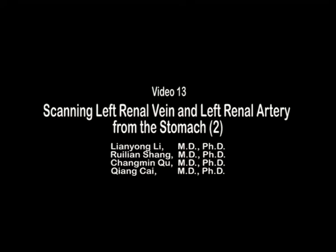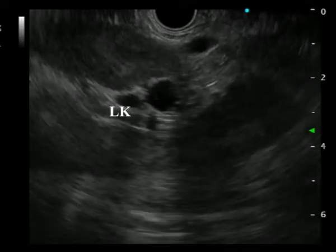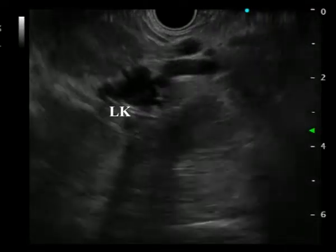Video 13: scanning left renal vein and left renal artery from the stomach, same process as shown in video 12. By advancing the scope from the cardia or withdrawing the scope from the antrum, the characteristic renal structures consisting of the outer hypoechoic cortex and the inner hyperechoic medulla can be easily seen.